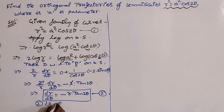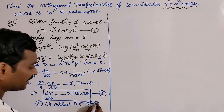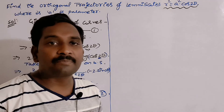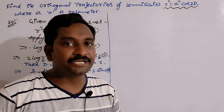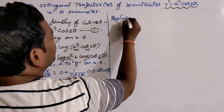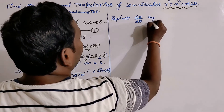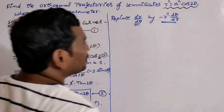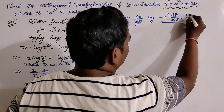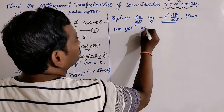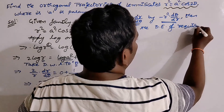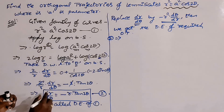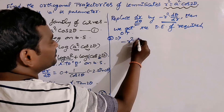This is called the differential equation of the given family — equation (1). Now we have to get the differential equation of the required orthogonal trajectories. For that purpose, we replace dr/dθ by -r²·dθ/dr, which is a very important step. Replacing dr/dθ by -r²·dθ/dr gives us the orthogonality condition.